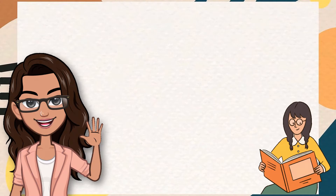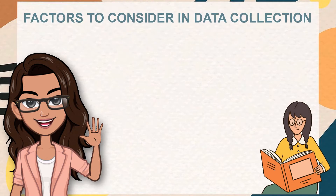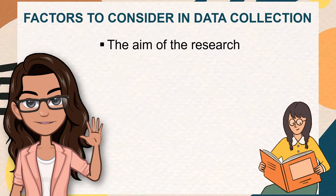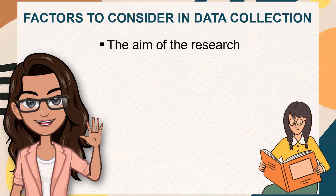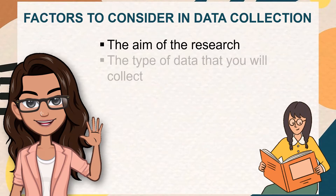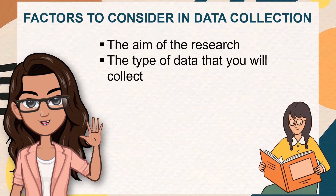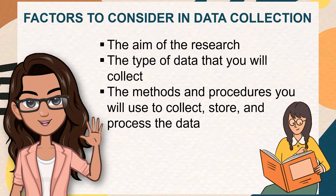Before you begin collecting data, you need to consider the following factors. First, the aim of the research — identify exactly what you want to achieve. You can start by writing a problem statement: what is the practical or scientific issue that you want to address and why does it matter? Also consider the type of data you will collect, and the methods and procedures you will use to collect, store, and process the data.